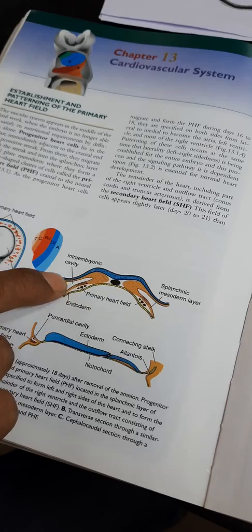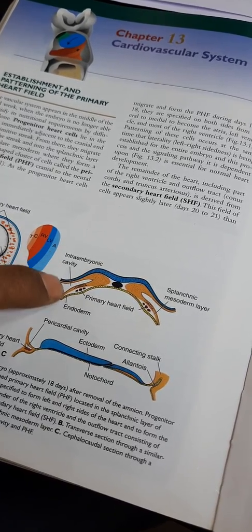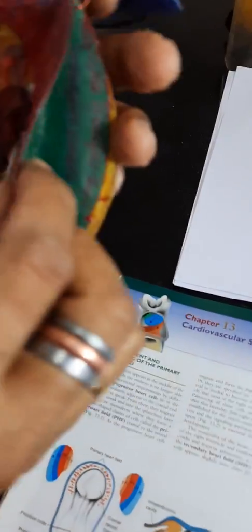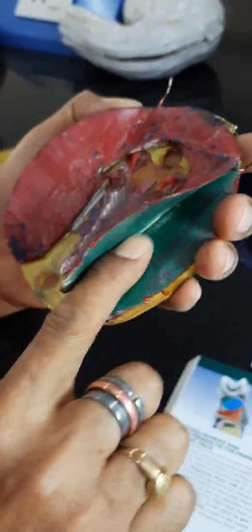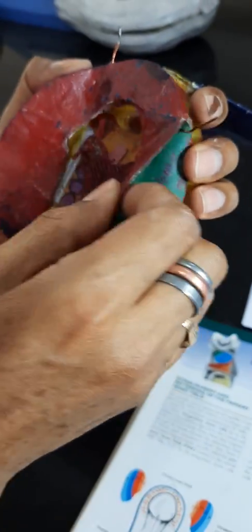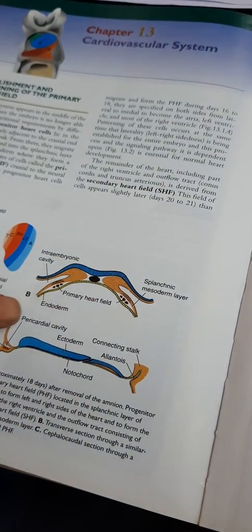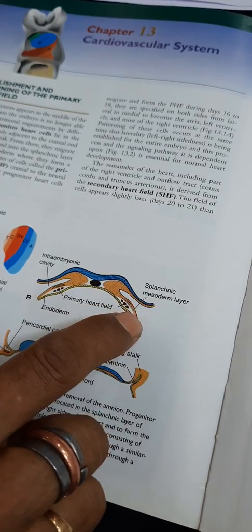Within the lateral plate mesoderm there will be a formation of a cavity. This cavity is called the intraembryonic coelom. This cavity is inside the lateral plate mesoderm and is continuous with the opposite half. Now this cavity is separating this lateral plate mesoderm into somatopleuric — above this cavity — and splanchnopleuric intraembryonic mesoderm below this cavity.